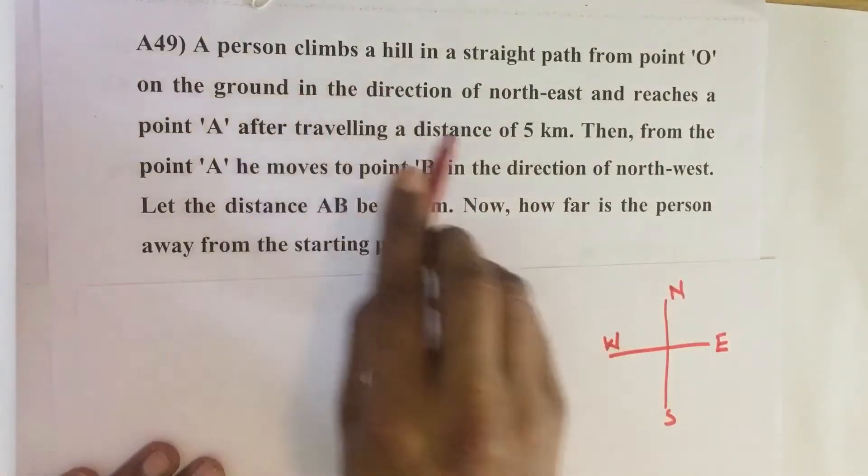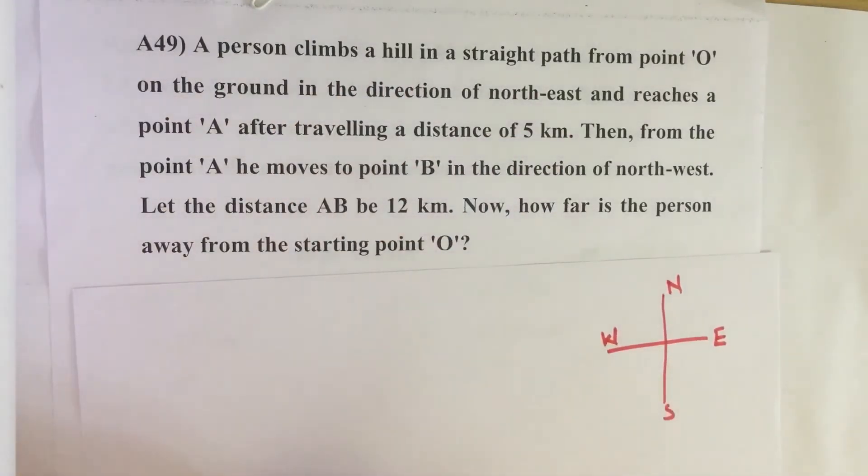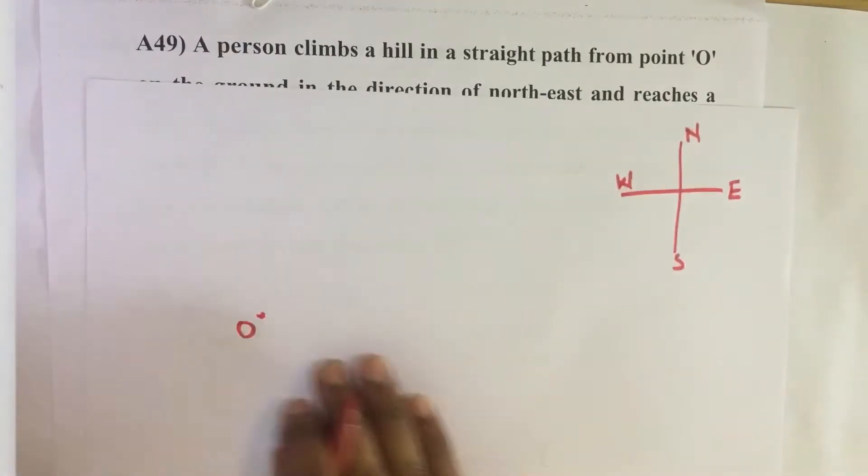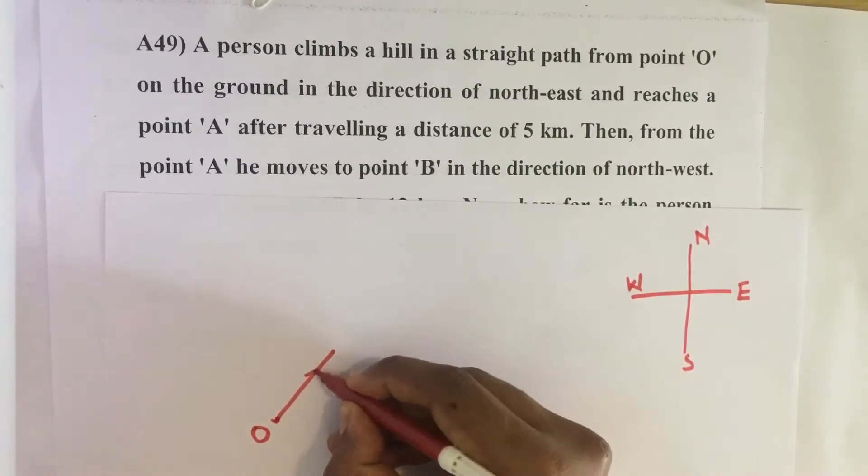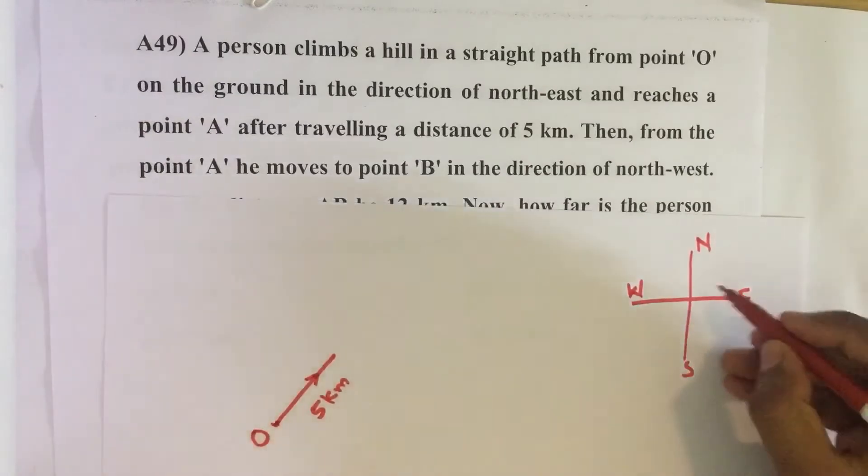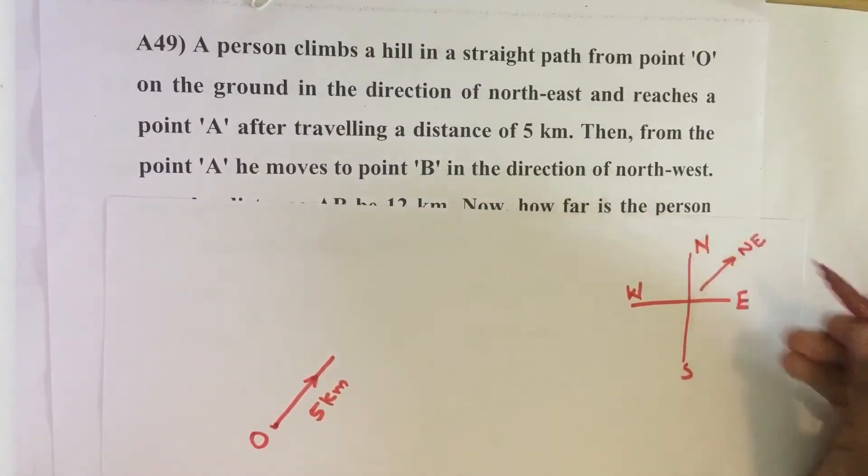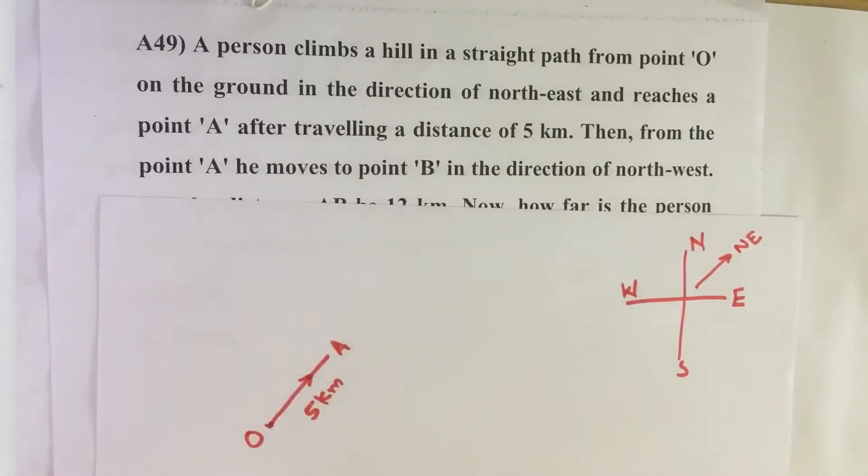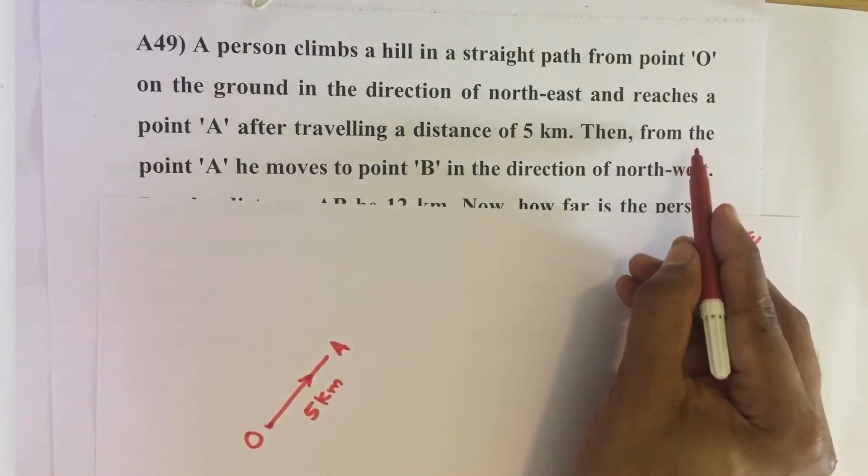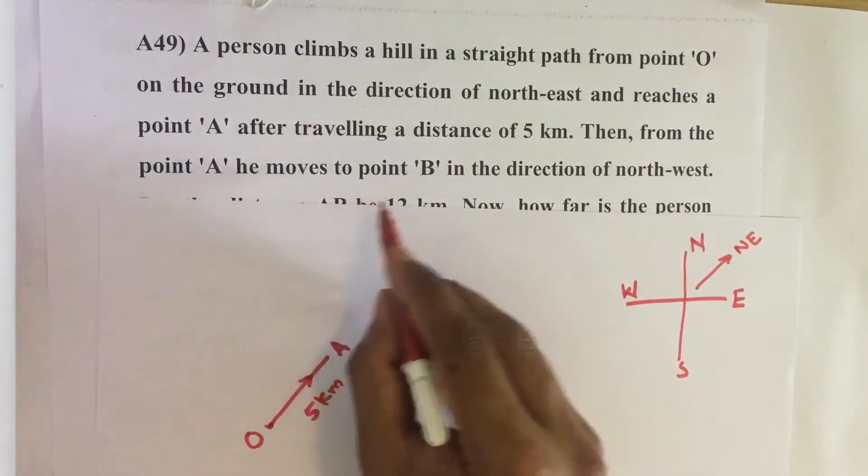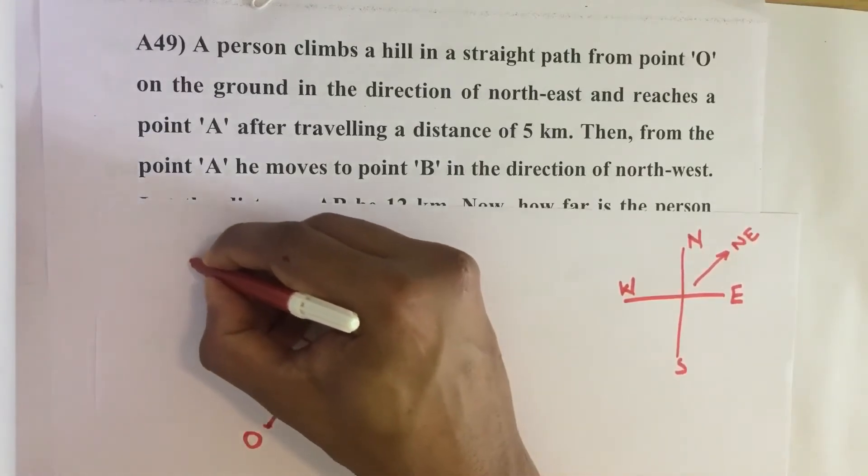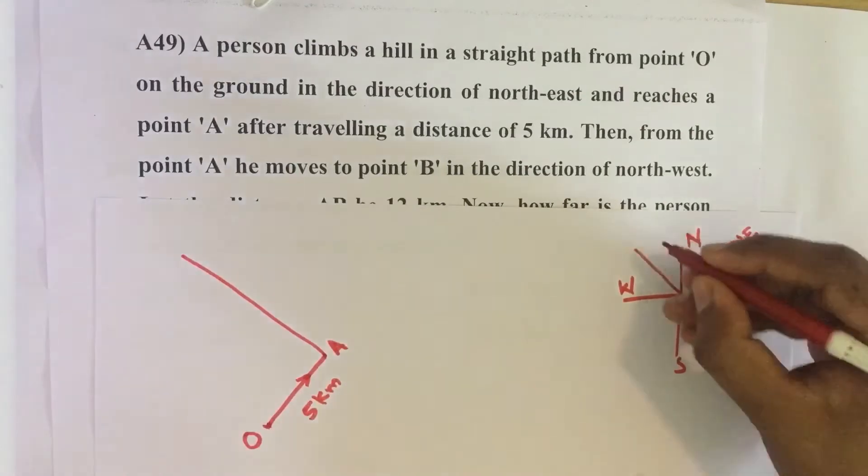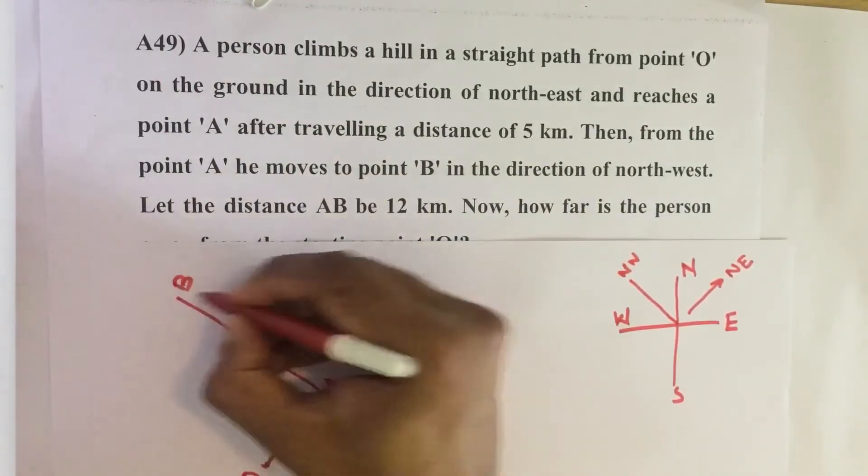A person started climbing from point O in the northeast direction. After traveling 5 km, he reaches point A. Then from point A, he moves to point B in the direction of northwest. This is northwest and that is 12 km.